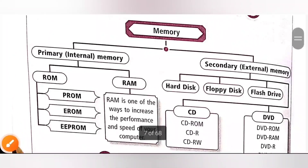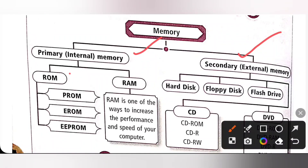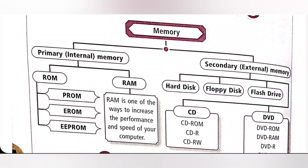We know there are two types of memory: Primary Memory and Secondary Memory. Primary Memory is also known as Internal or Main Memory. Secondary Memory is also known as External Memory. ROM and RAM are types of Primary Memory. Hard Disk, Floppy Disk, Flash Drive, CD, and DVD are types of Secondary Memory.